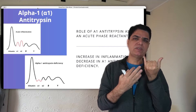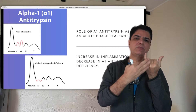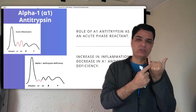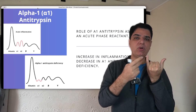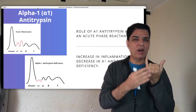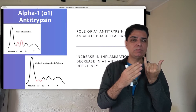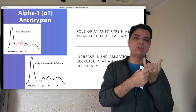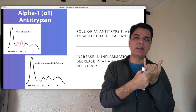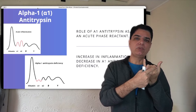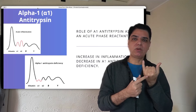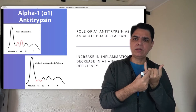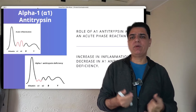Based on different disorders, these humps can go up and down. We'll focus on the alpha-1, alpha-2, beta, and gamma globulins — the alpha-1 globulins first.